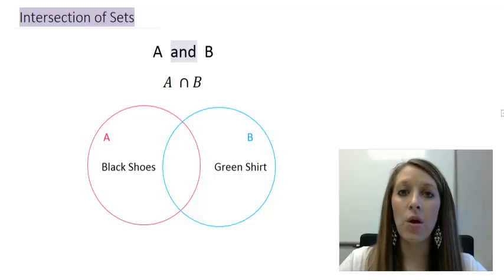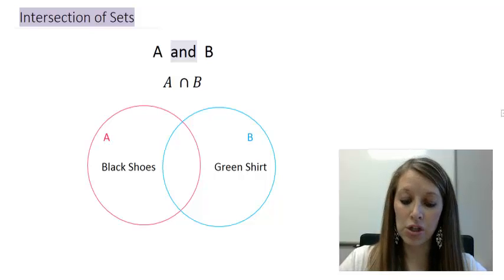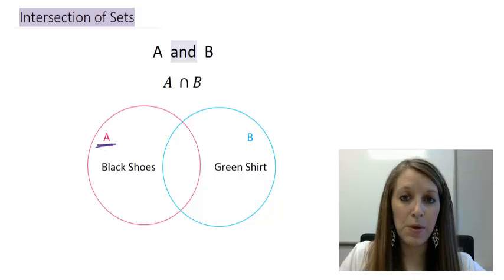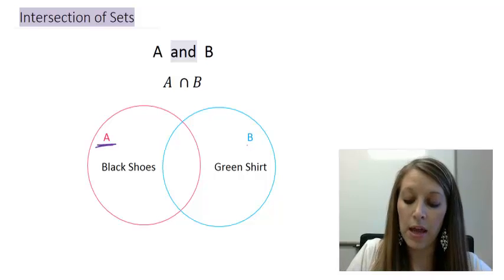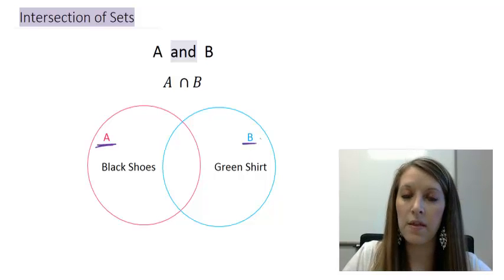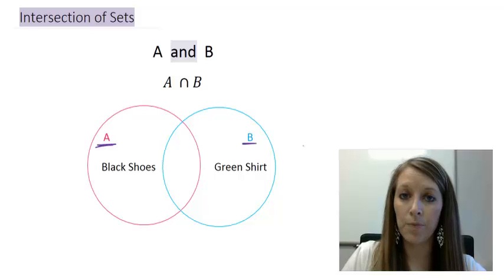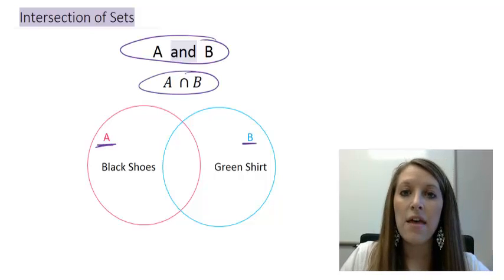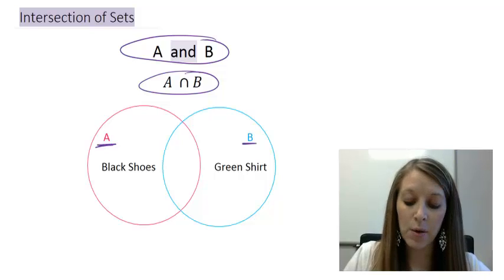Let's just say that you are in a room full of people. Now, some of these people are wearing black shoes. And if you are wearing black shoes, then you fit into my A circle. And some of these people in this room are wearing a green shirt. And if they are in that group, then they are in my B circle. Now, for us to fulfill the criteria of A and B or A intersect B, they have to be fulfilling both sets of criteria. They have to be wearing black shoes and a green shirt.